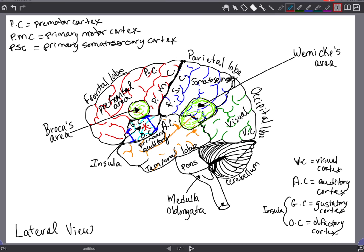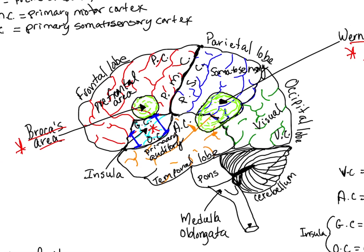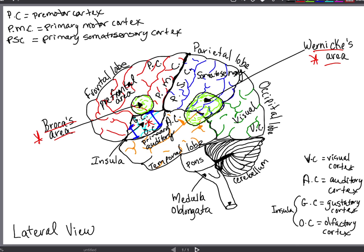Speech involves two things: one is the formation in the mind of thoughts to be expressed and the choice of words, and two, motor control of vocalization and the act of vocalization. The specialized language areas in the brain include Wernicke's area, which is the analytical area and also plays a role in personality, and Broca's area, the speech center, which is for speech production and regulates breathing patterns for speech.